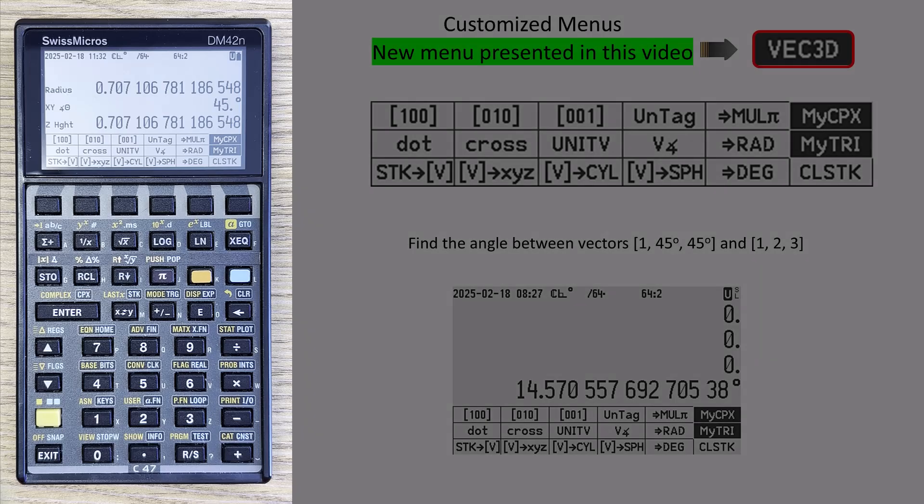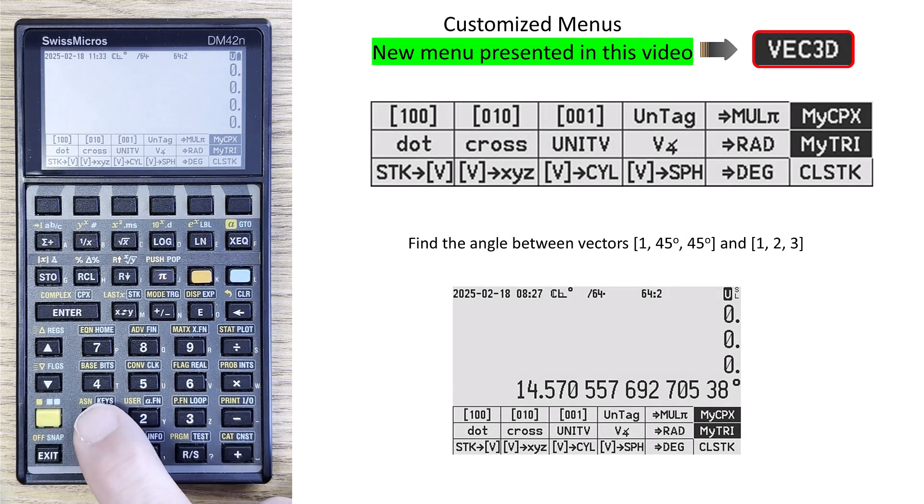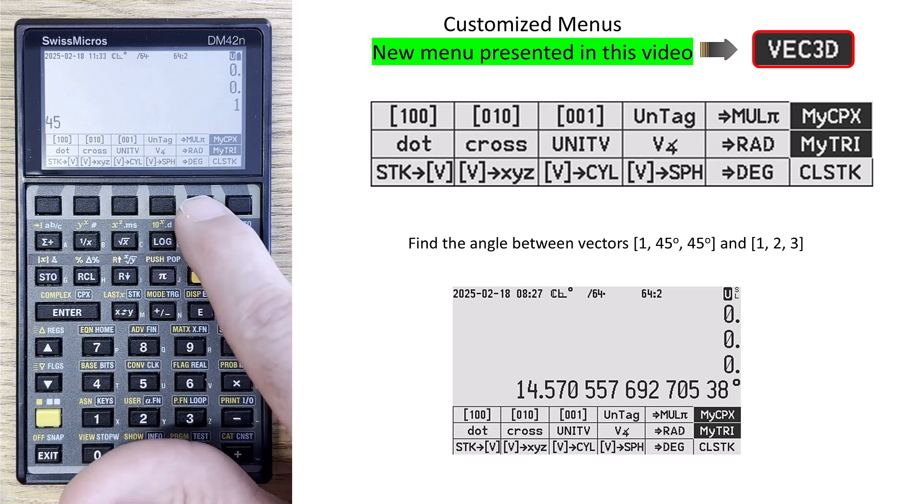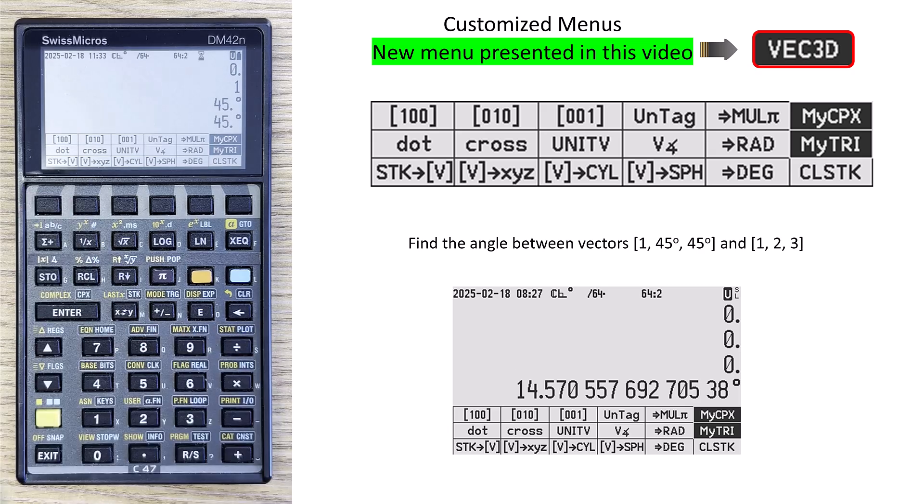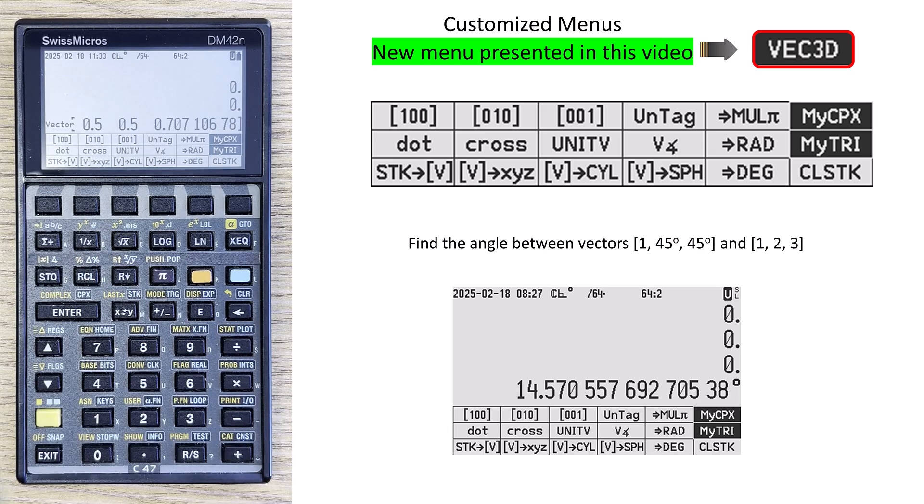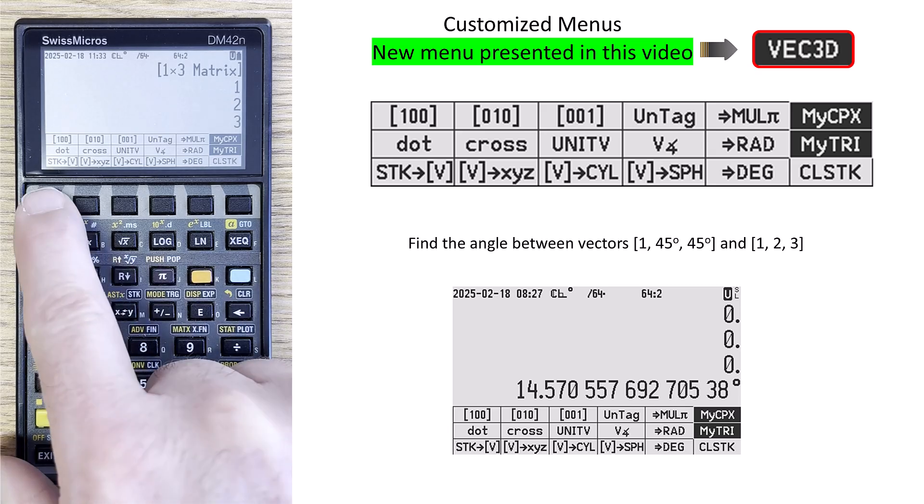One more example. Find the angle between these two vectors. Let's clear the stack. The first vector is 1, 45 degrees, 45 degrees. And I'll put this into vector format. And then the second one is 1, 2, 3. So 1, 2, 3. And I also bring this into the vector.